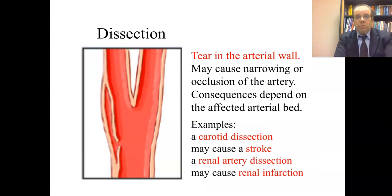What is a dissection? A dissection is a tear in the arterial wall. It may cause narrowing or occlusion of the artery. The consequence depends on the affected arterial bed. For example, a carotid dissection may cause a stroke — one of the potentially severe consequences of FMD — while a renal artery dissection may cause a renal infarction, meaning part of the kidney may no longer function.